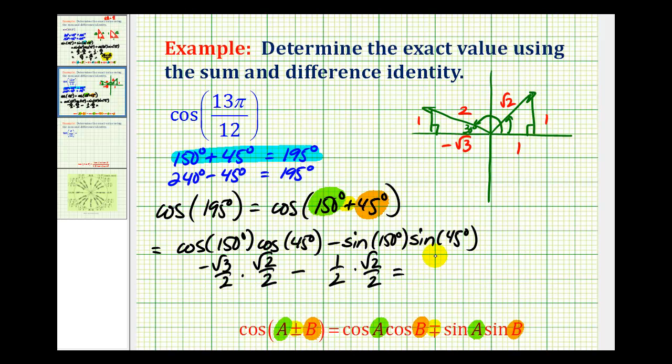So we're going to have negative square root 6 minus square root 2 divided by 4. And there's one more thing I want to mention. Some textbooks will write this in a different form. We know we could factor out a negative or negative 1 in the numerator.